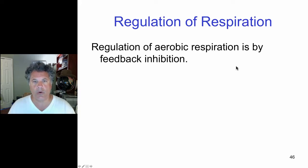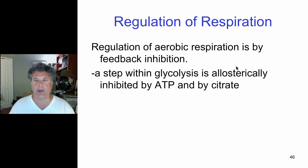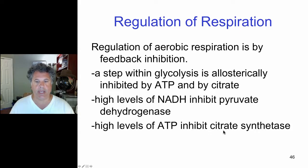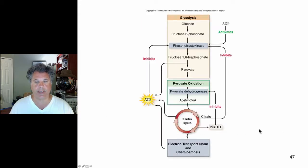Now the respiratory pathway is a biochemical pathway that can be regulated. And we've talked about the theoretical nature of feedback inhibition but we haven't given a specific example. So we can give specific examples, namely inhibiting a step of glycolysis by high levels of ATP and NADH inhibiting pyruvate dehydrogenase and as well high levels of ATP inhibiting citrate synthetase. So let's look at this schematically here now.